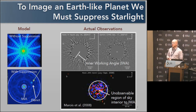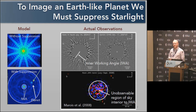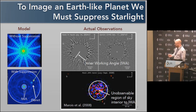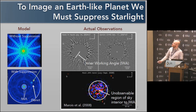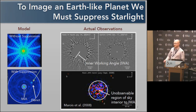To directly image an Earth-like planet, it is 10 billion times fainter than its host star, and it's separated by less than one one-hundredth the width of a human hair held at arm's length. So this is very challenging. We have to suppress starlight to do this, otherwise the diffracted starlight throughout your telescopic system will end up swamping the image.